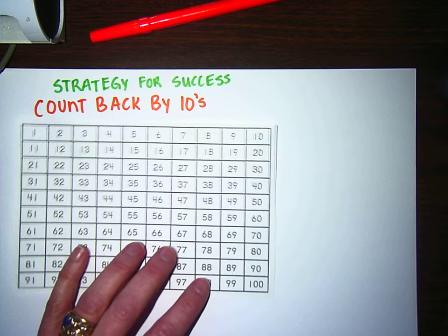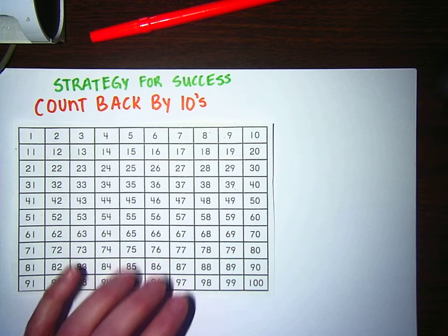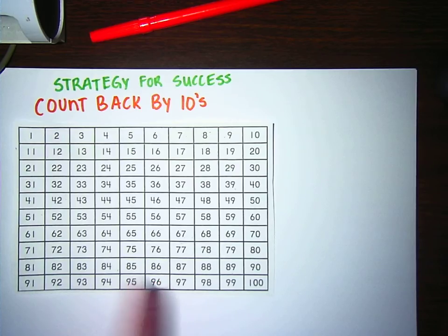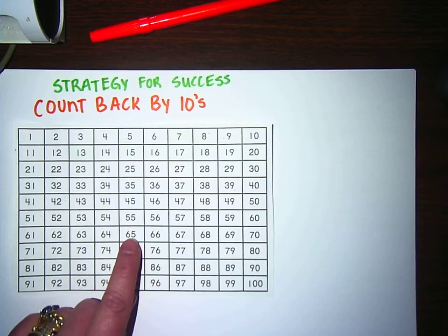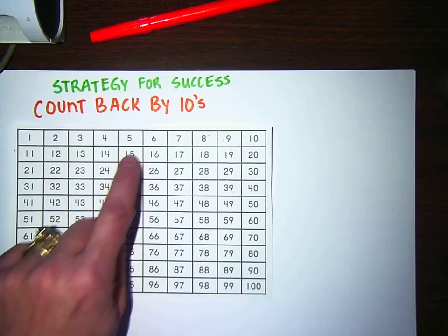This is a strategy for success because it allows you to find an easy way to count backwards simply by using your hundreds chart. So, for example, if I start at the number 65 and I want to count back by tens, all I do is go up on the hundreds chart.